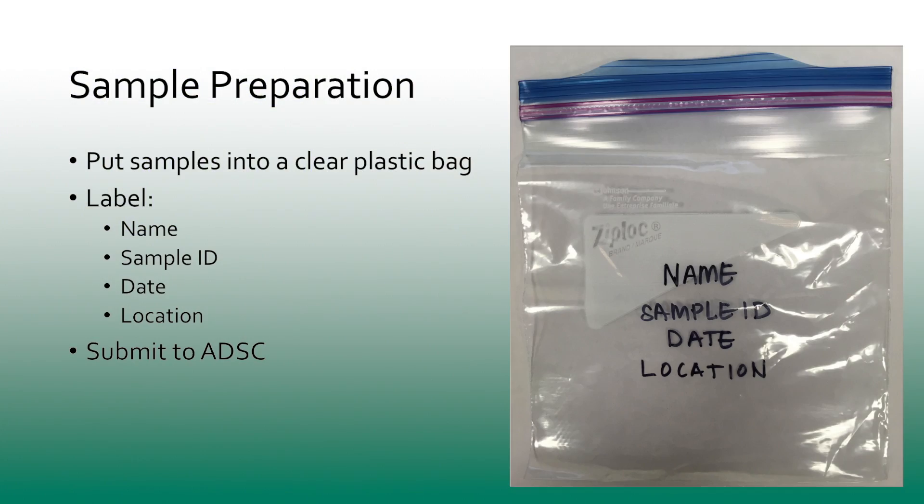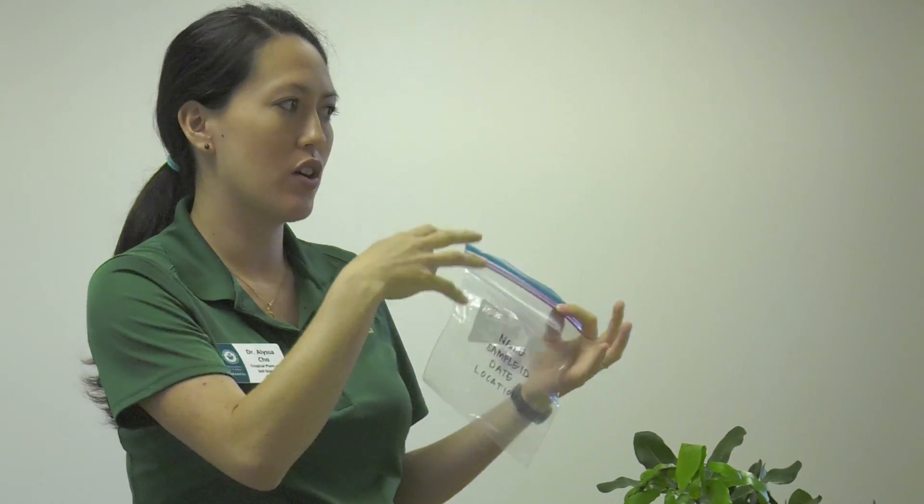For sample preparation, just like Marisol said, it's important to submit your samples with appropriate labeling. Make sure you label it with your name, a sample ID — which could be as simple as 1, 2, 3, 4, or correlated to a field map — a date and a location. These are basic details so that if the sample gets separated from your paperwork, the ADSC can usually match it back up and still get you your results. It's just good practice since we send our samples to Oahu and sometimes things get mixed up.